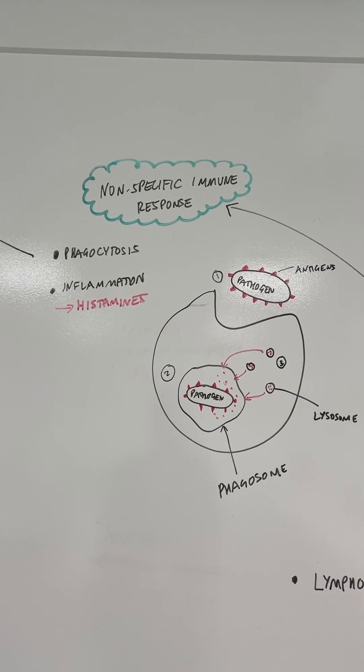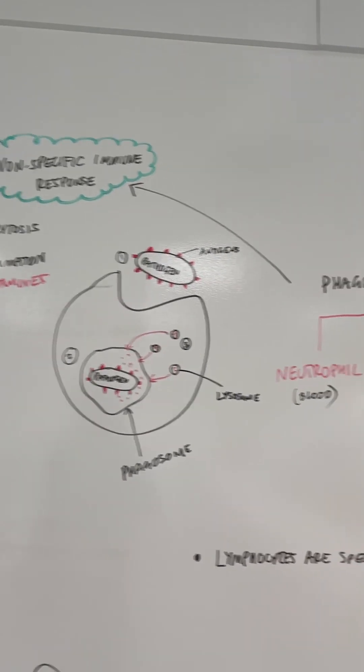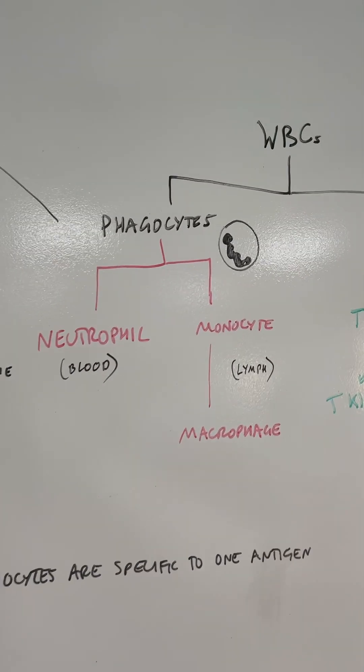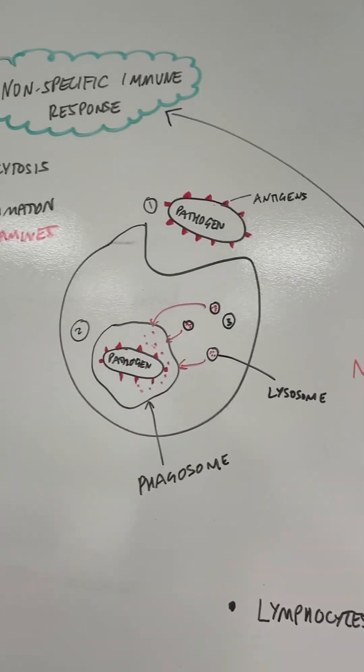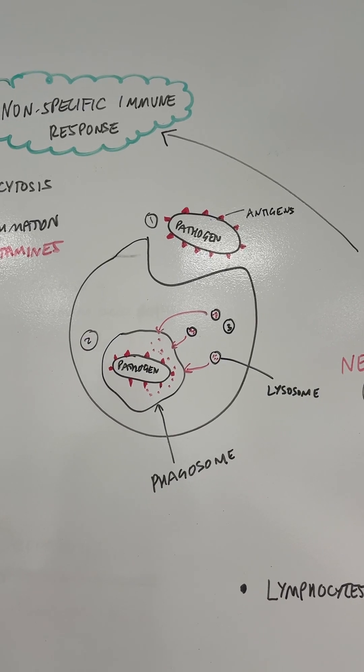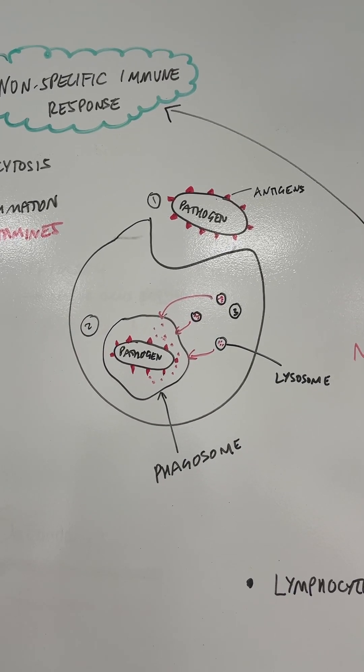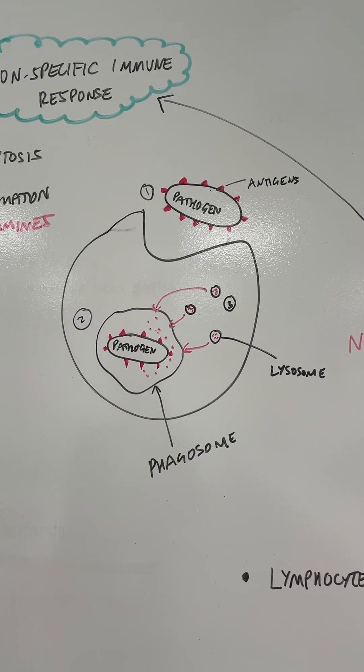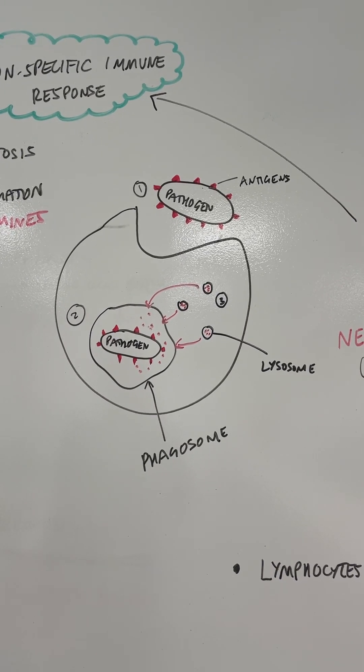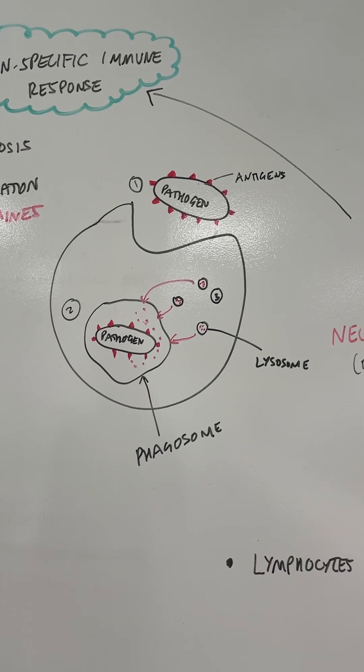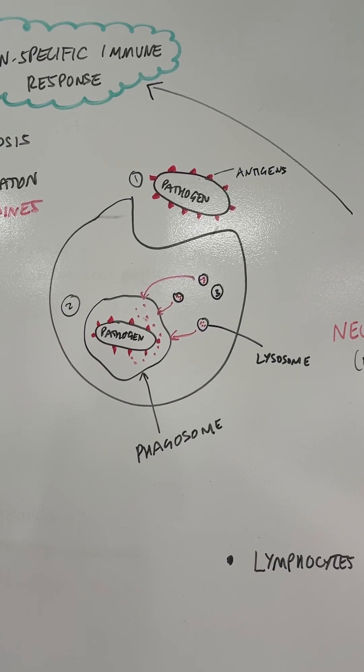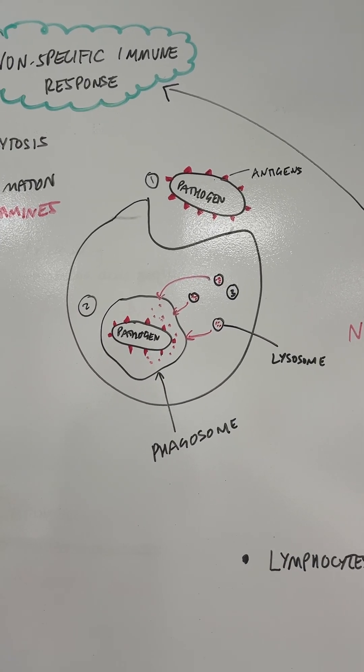One of the things that can happen is phagocytosis. These phagocytes here, the neutrophils and macrophages, can do a process called phagocytosis where they engulf the pathogen into what's called a phagosome via endocytosis. Then lysosomes are released into that phagosome which release lysozyme enzymes to break down the pathogen.